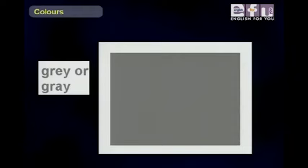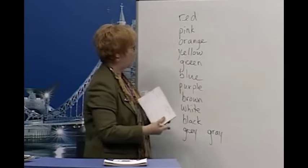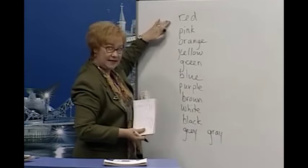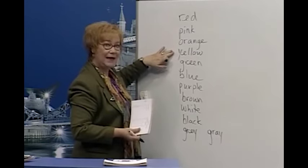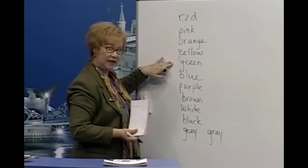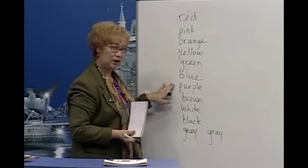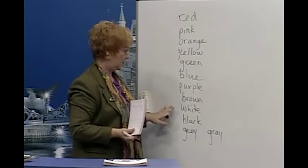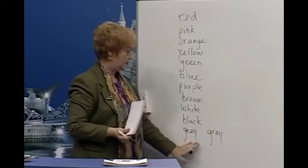And gray. There are two ways to spell it — gray or grey. These are the same. So again, we have red, pink, orange, yellow, green, blue, purple, brown, white, black, and gray.